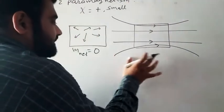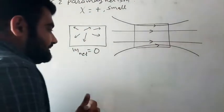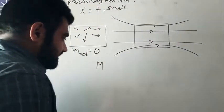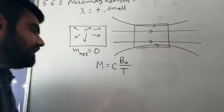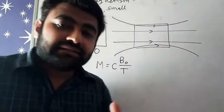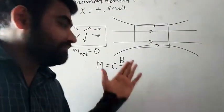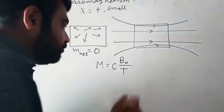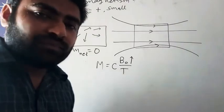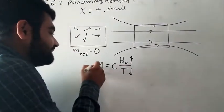That property phenomenon is given by Curie scientist. Curie gives one equation: M is equal to C B by T. So magnetization with temperature - if temperature is more, magnetization is less. To get maximum magnetization, we need external magnetic field and low temperature.